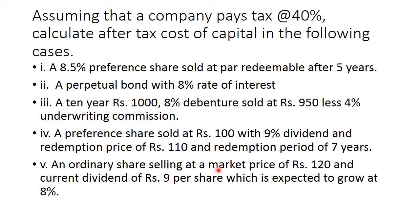Fifth, an ordinary share selling at a market price of 120 rupees and current dividend of 9 rupees. The market price is 120, current dividend is 9 rupees and growth rate expected to grow at 8%. Price is given, rate of dividend is given or rather dividend in rupees is given and growth rate of increase in the dividend is also given to us. By using all these, in these 5 cases, we have to calculate the specific costs of capital. Let us see them one by one.